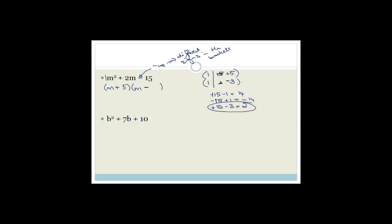So we write it as (m + 5)(m − 3). A quick tip: when the last sign is minus and you know the difference between the two factors, the bigger number gets the sign that matches what you want. Since we want +2, the bigger number (5) gets the plus. Trinomials are used all the way through to matric — on graphs, calculus, everywhere — so please make sure you can do this.